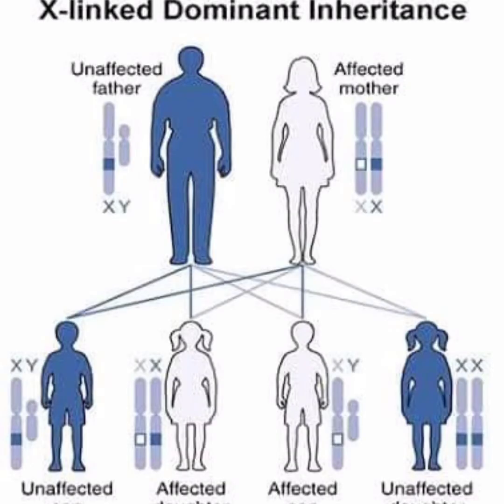Let us look at the picture of X-linked dominant inheritance, where the father is unaffected and the mother is affected. Two of their children could possibly be unaffected and two could be affected, as they can share both their genes from their son or daughter.